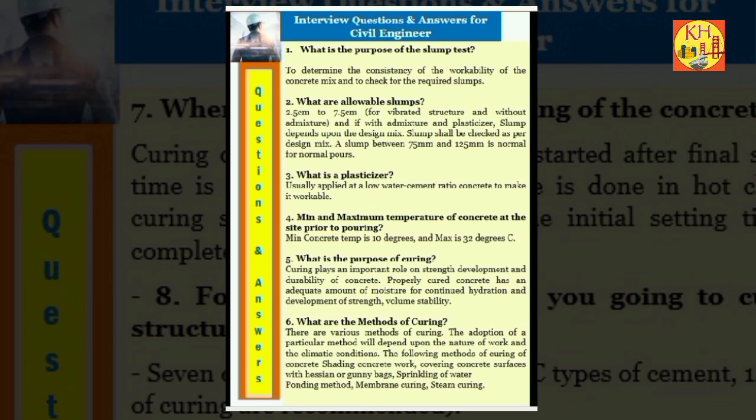Question 3: What is a plasticizer? Usually applied at a low water cement ratio concrete to make it workable. Question 4: Min and maximum temperature of concrete at the site prior to pouring. Min concrete temp is 10 degrees and max is 32 degrees C.